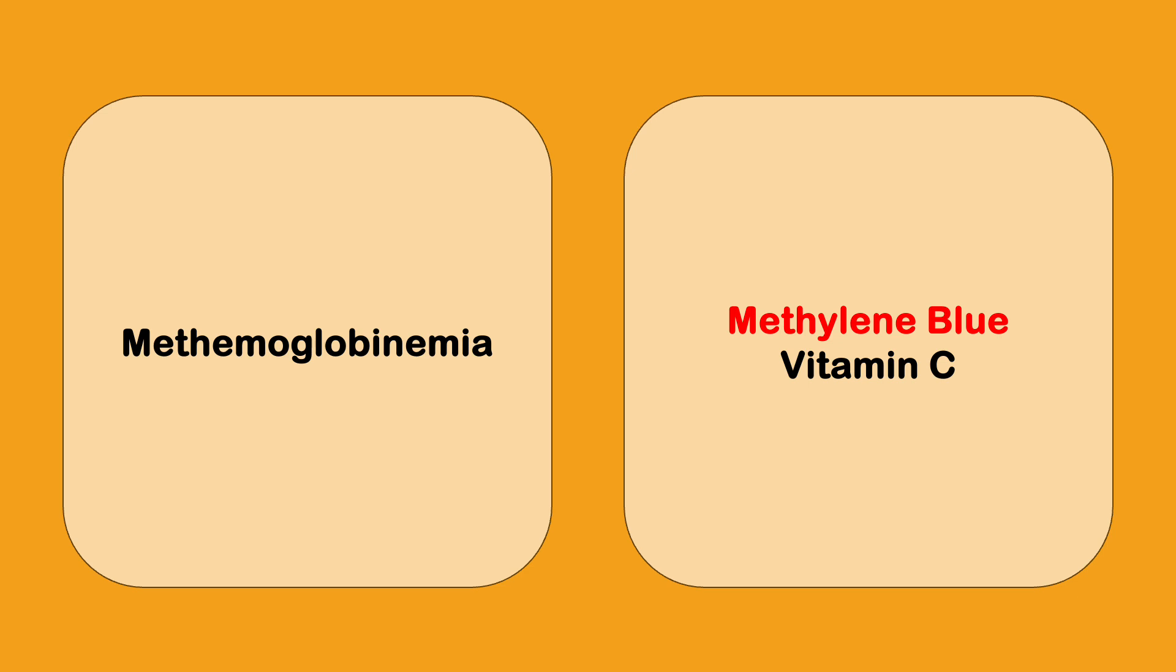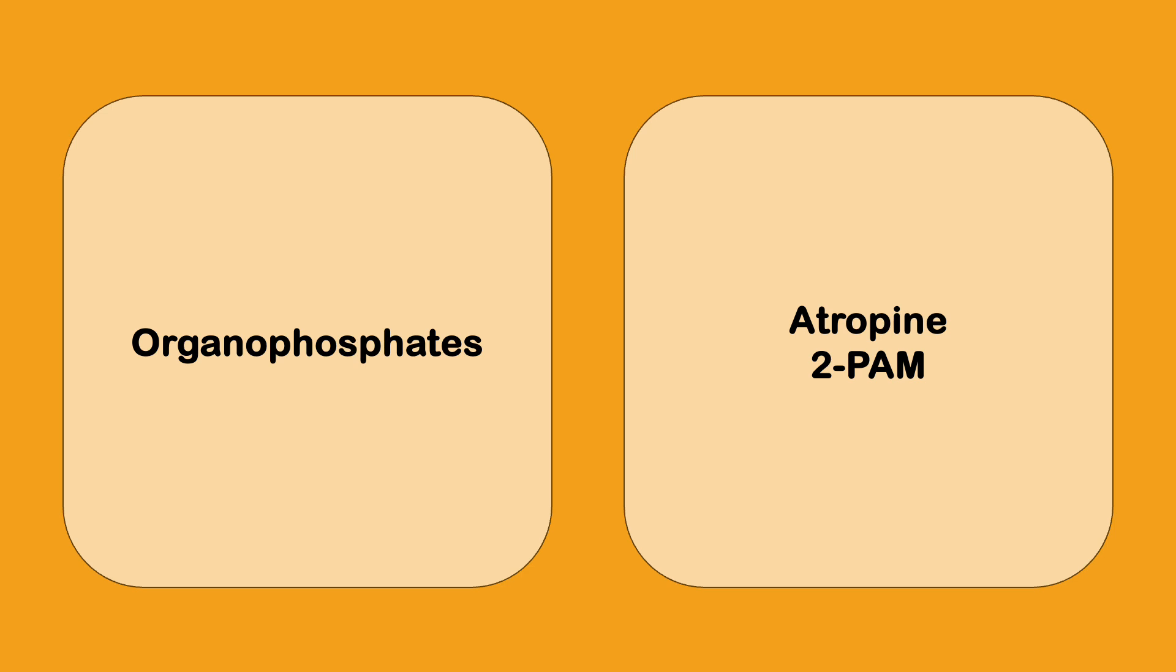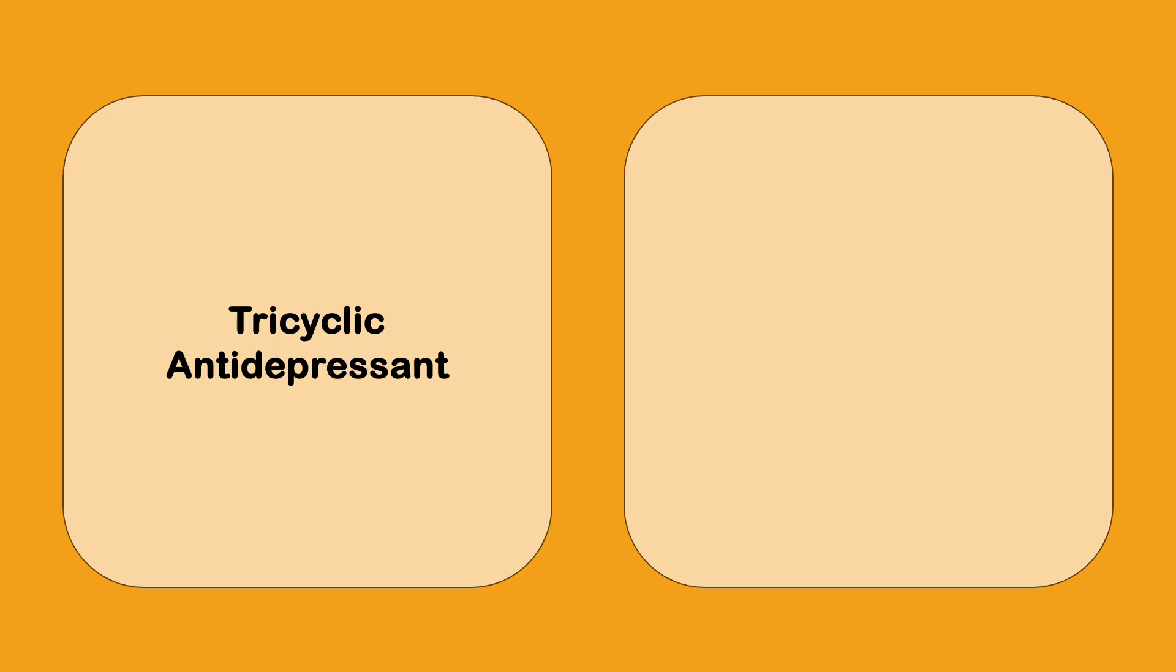Methanol, again you use ethanol, fomepizole, or dialysis. Opioids, you're going to use naloxone. Organophosphates, you're going to use atropine or 2-pralidoxime, 2-PAM.